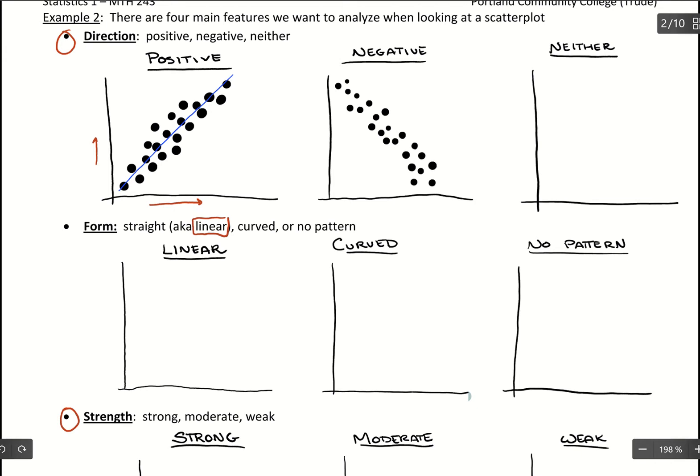So with this, it would be as we're increasing our X values, our Y values are decreasing this time. And if we imagined a line going through this data as best as it could fit, it would have a negative slope to it.